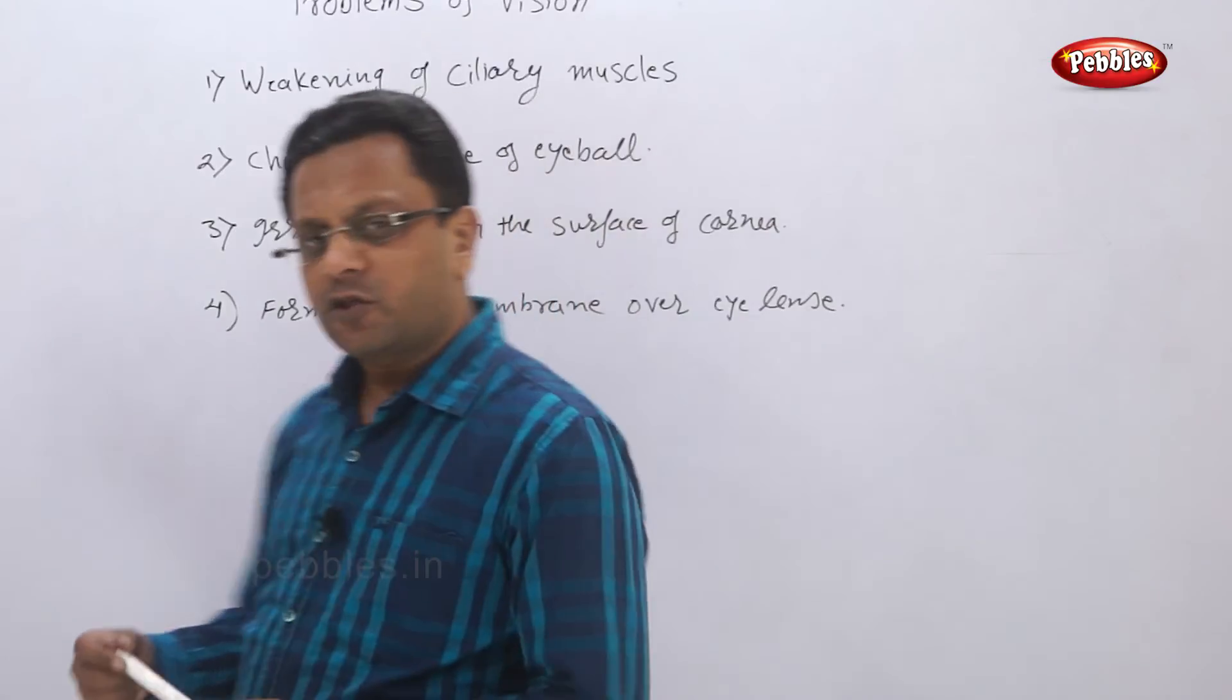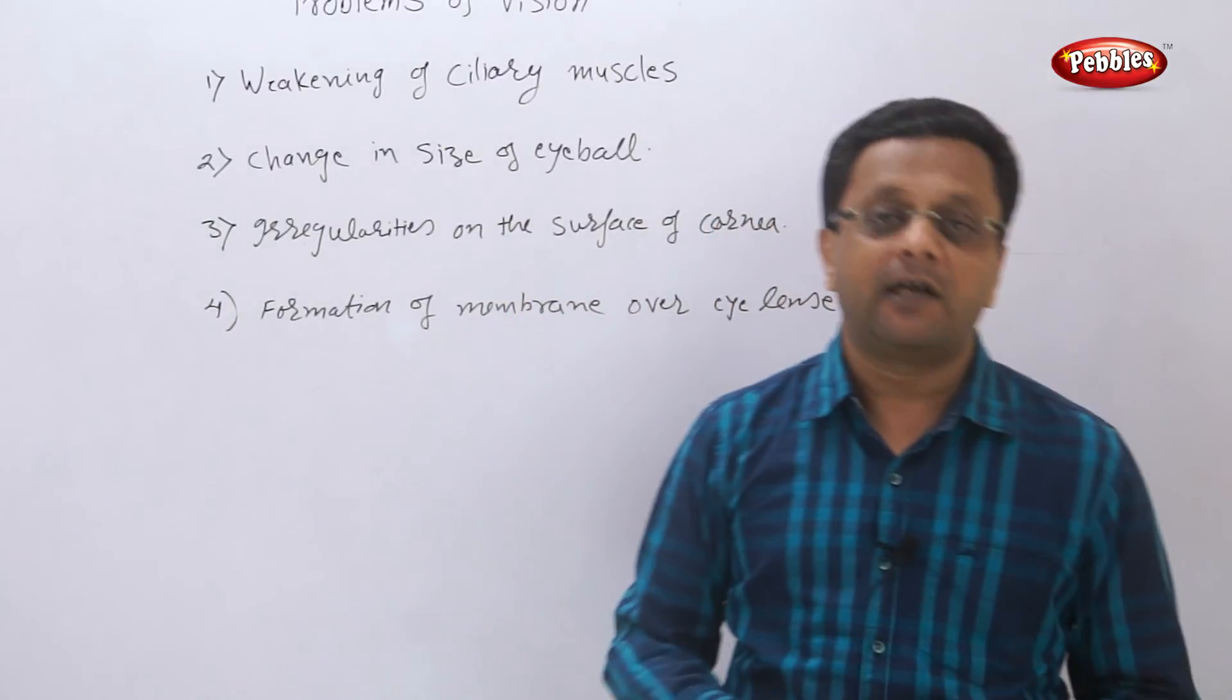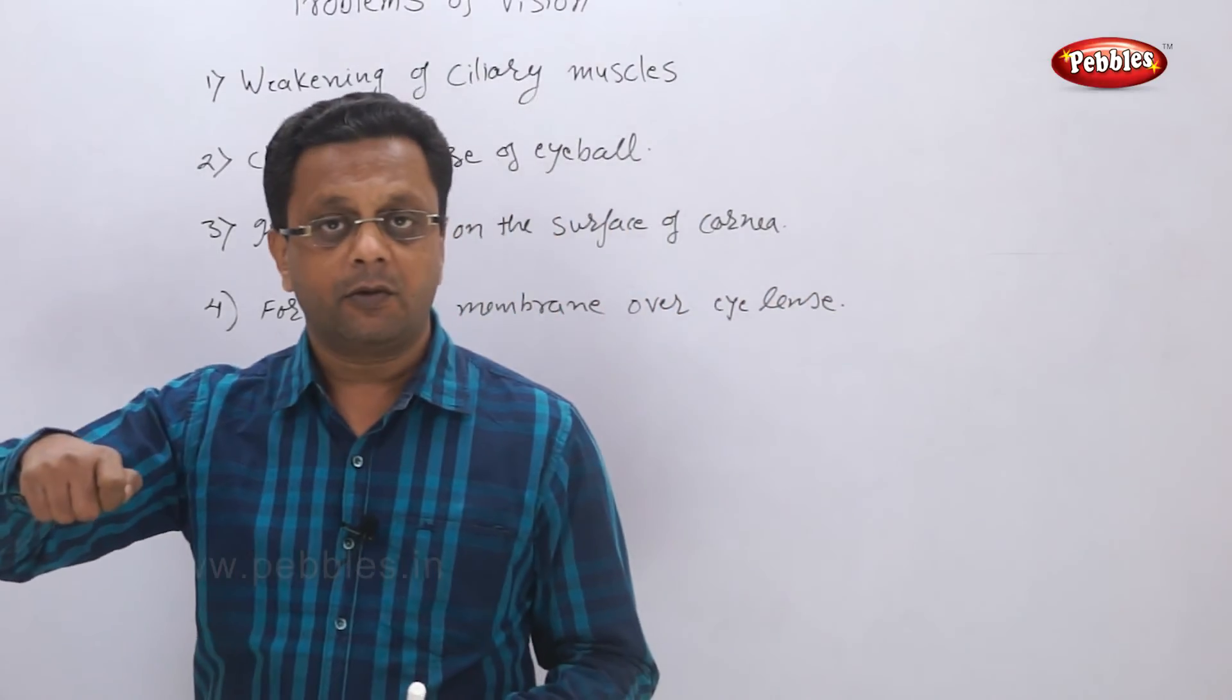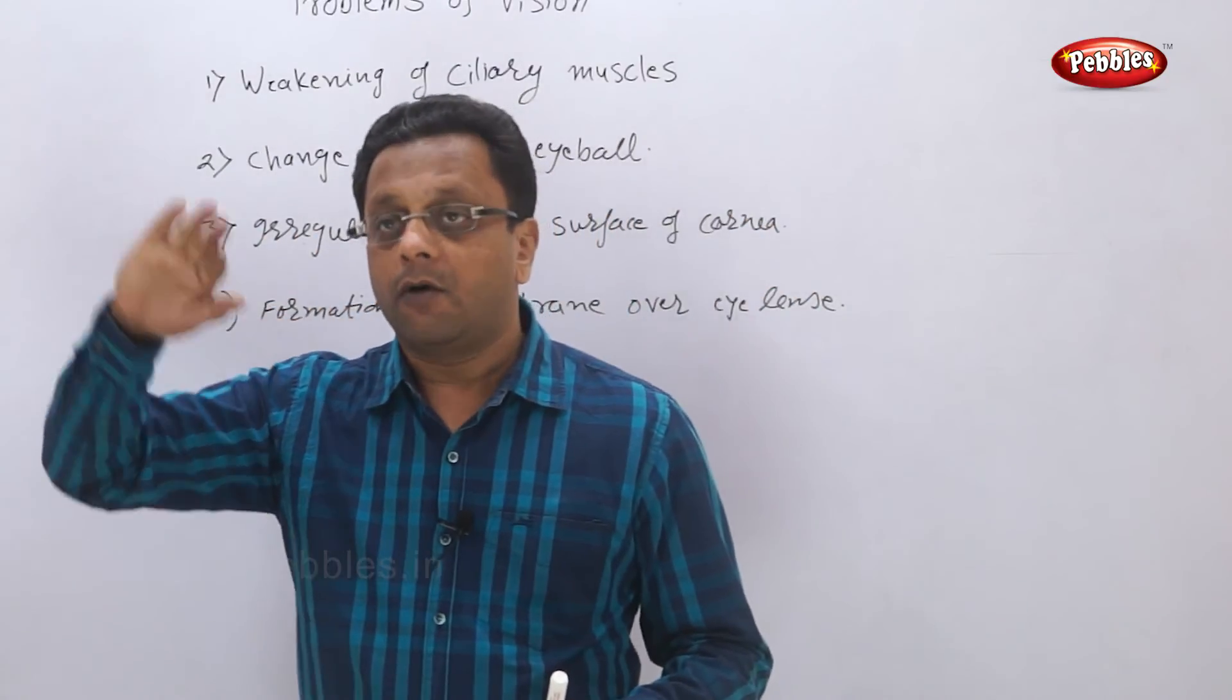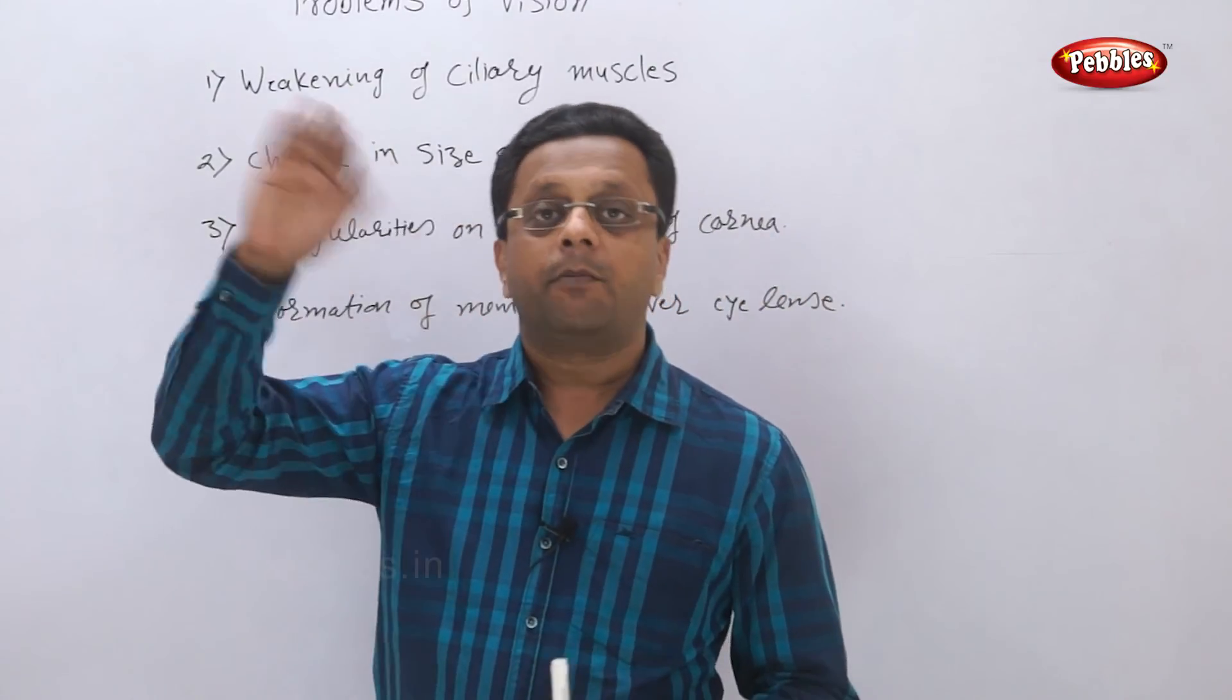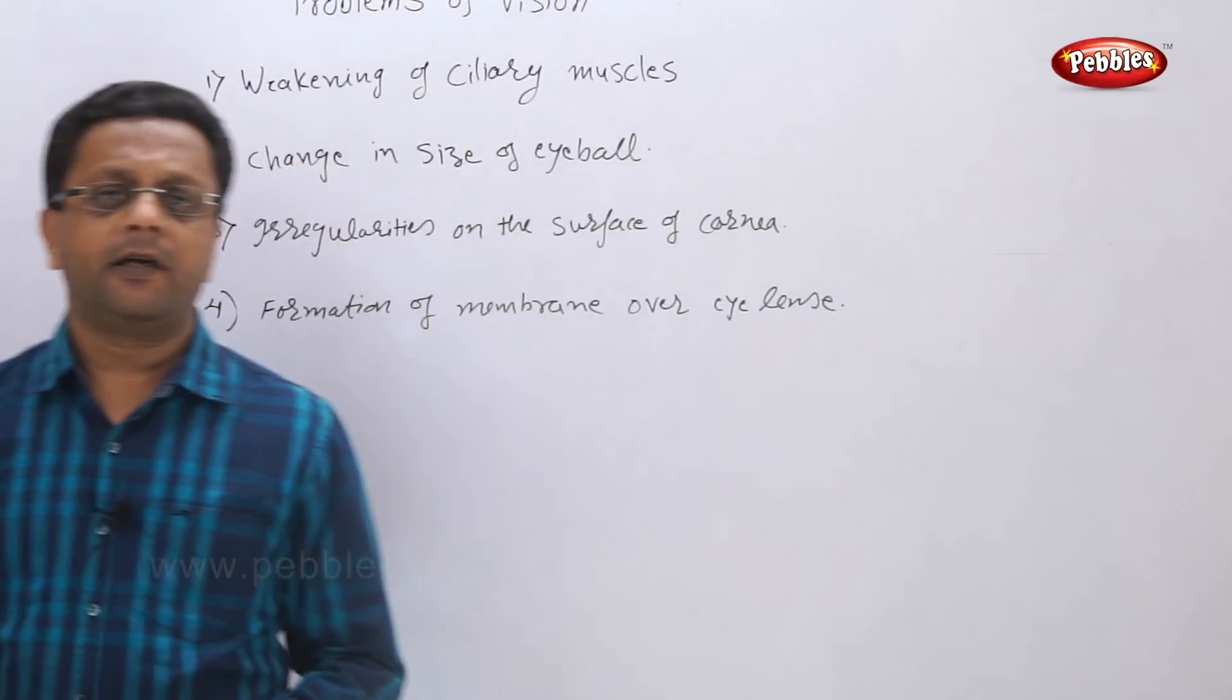Formation of membrane over eye lens - if some unwanted curtain-type membrane is formed on the lens, then the lens will get blurred. You know if you have a magnifying glass and blow on it, fog forms on the lens and you cannot see through it properly. The same kind of permanent membrane is formed on the lens surface, and the image will get blurred.